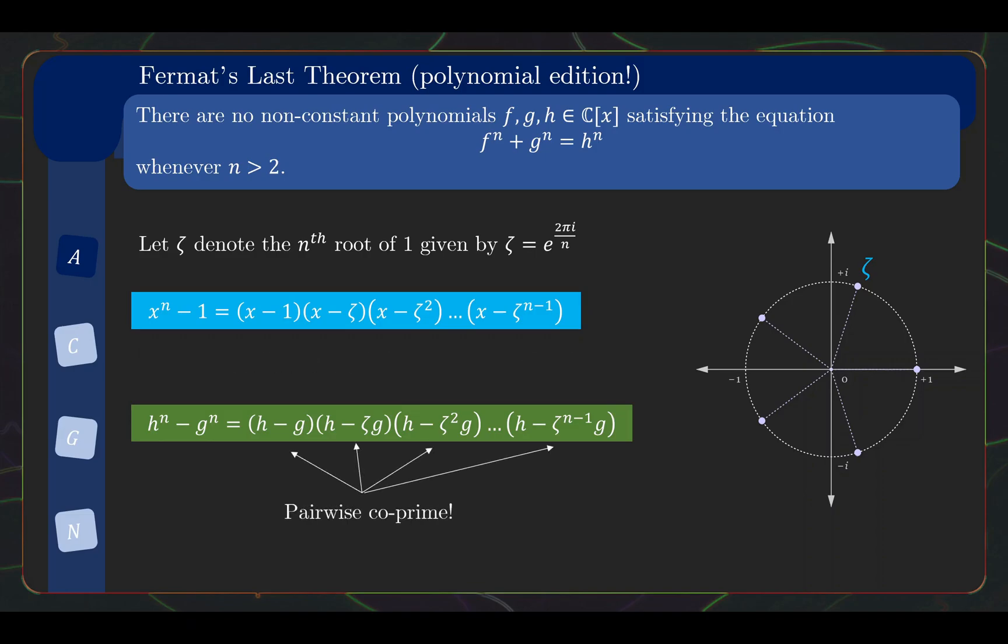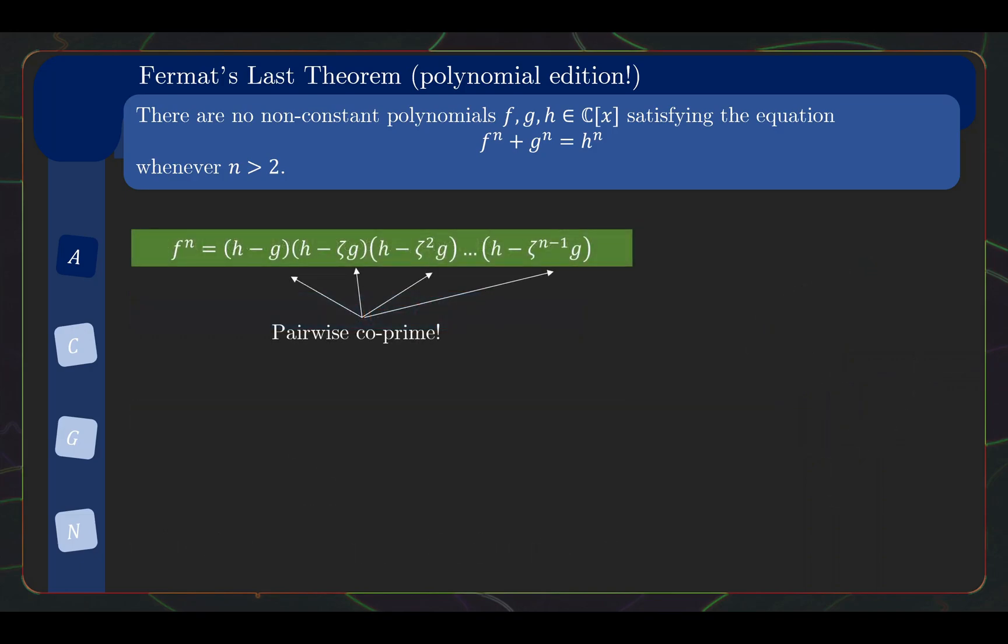In any case, what we really want out of this factorization is that each of these factors are pairwise coprime. Indeed, a series of manipulations, which we shall leave as an exercise to the viewer, shows that gcd of any two of them equals the gcd of g and h, which we assume to be coprime. So now, what we have at the end of the day is that f^n, which is h^n - g^n, can be factorized as a product of coprime factors.